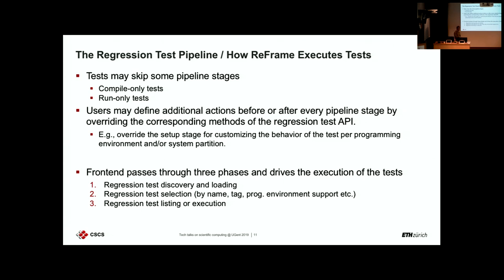The frontend — the command-line interface — drives the pipeline through three distinct phases. First is the discovery of tests: the framework goes into your directories looking for Python files that are ReFrame tests, using a mechanism to identify them. Then there is test selection, where loaded tests are filtered. You can filter by name, by programming environment — for example, you can say 'I want all tests that support the GNU programming environment and are tagged production'. The third phase is the action: either list the tests to see what's going to be run, or actually run them.